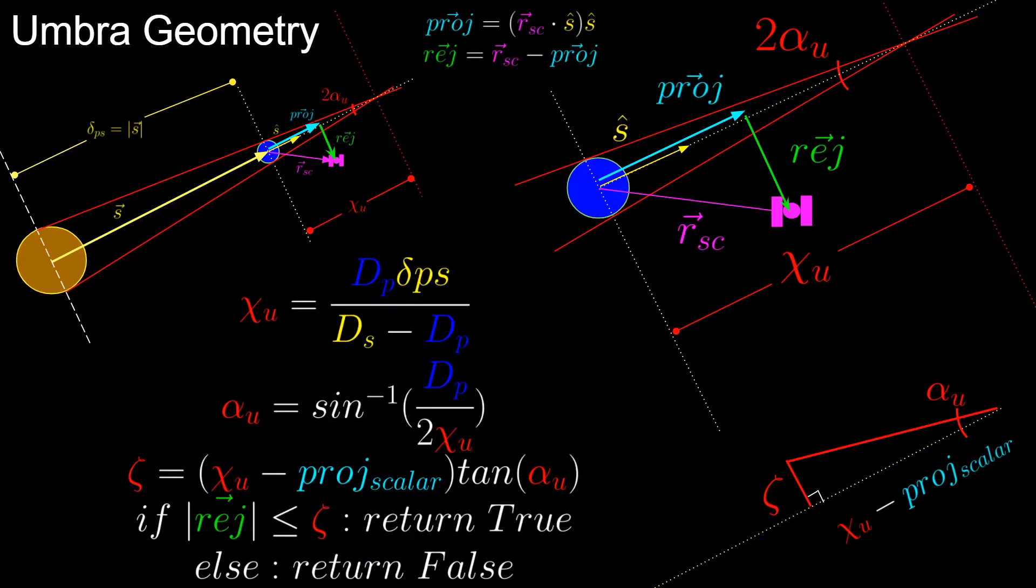So in the last video, we assumed that the eclipse body, which was a spacecraft, was a point mass, so all we needed to do in order to figure out if it was an eclipse was to compare the magnitude of the rejection vector to the radius of the cone at its projection to the sun vector.